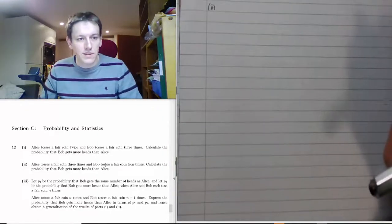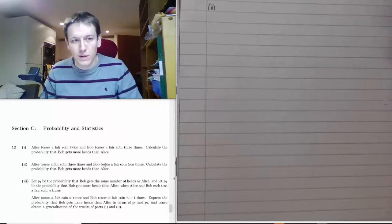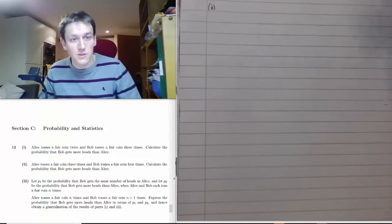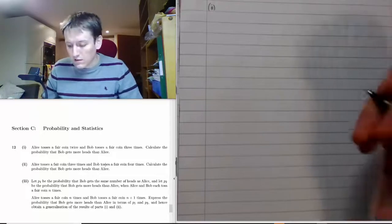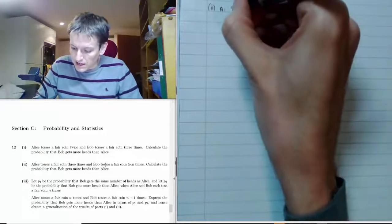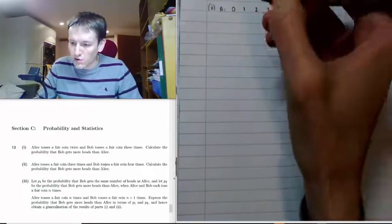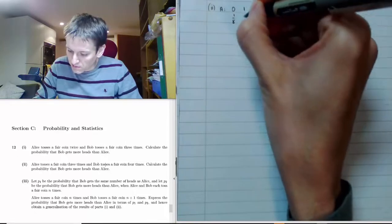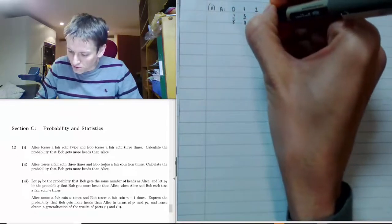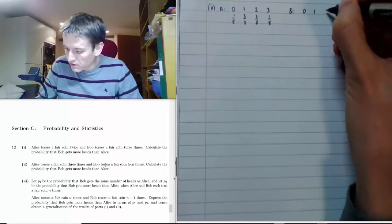Part two is quite similar. This time Alice tosses three times and Bob tosses four times, still fair coins — same question: probability that Bob gets more heads than Alice. We'll use the same strategy with a slightly more complicated setup. Alice's probability distribution over 0, 1, 2, 3 is just the same as the probabilities we already worked out for Bob in part one.